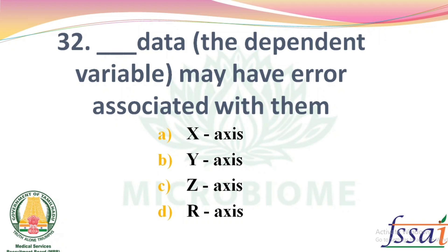Dash data, the dependent variable, may have error associated with them. Options: X-axis, Y-axis, R. The right answer: Option B, Y-axis.